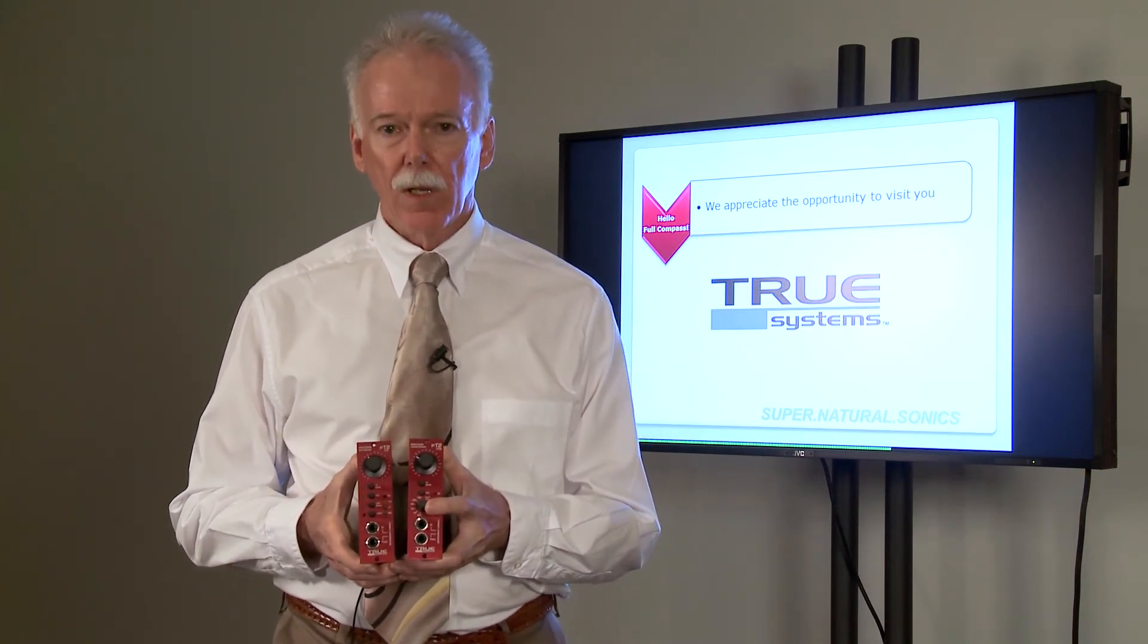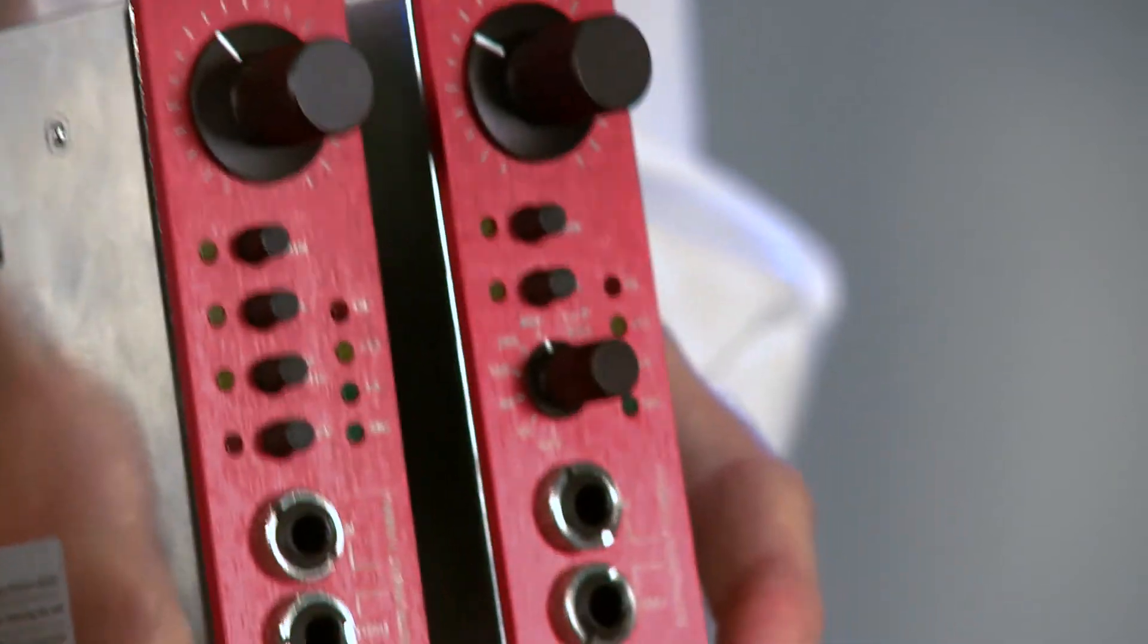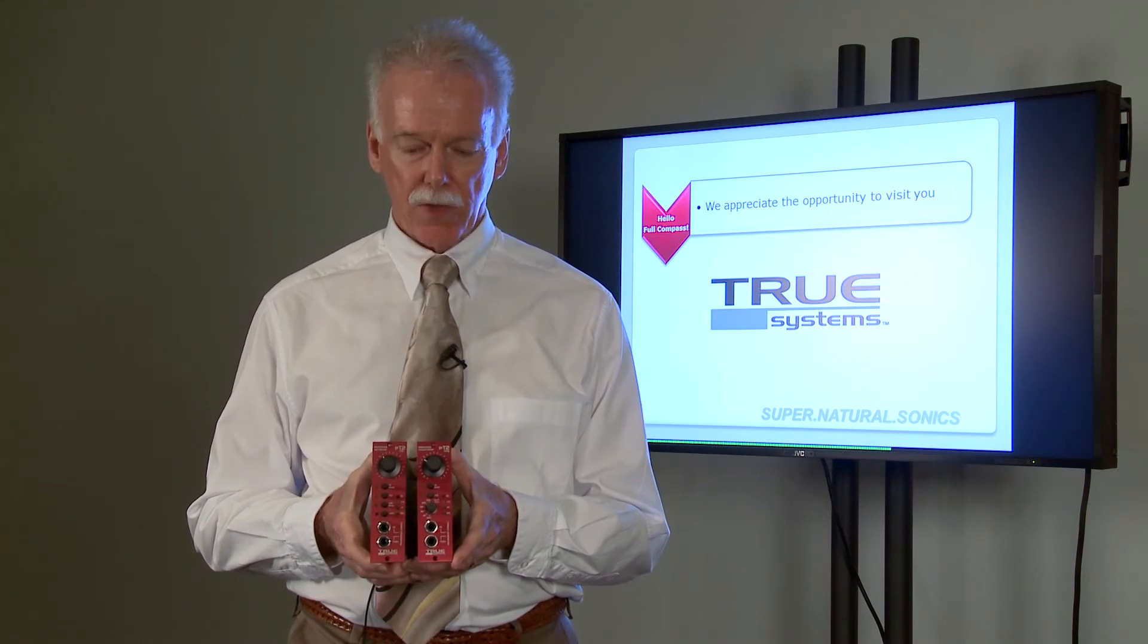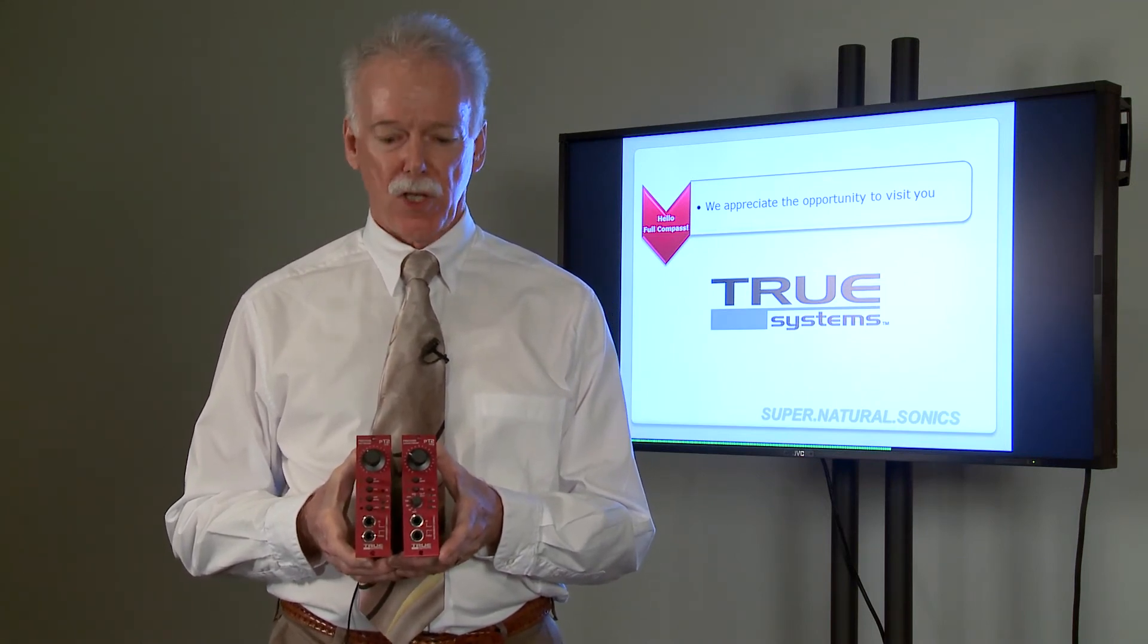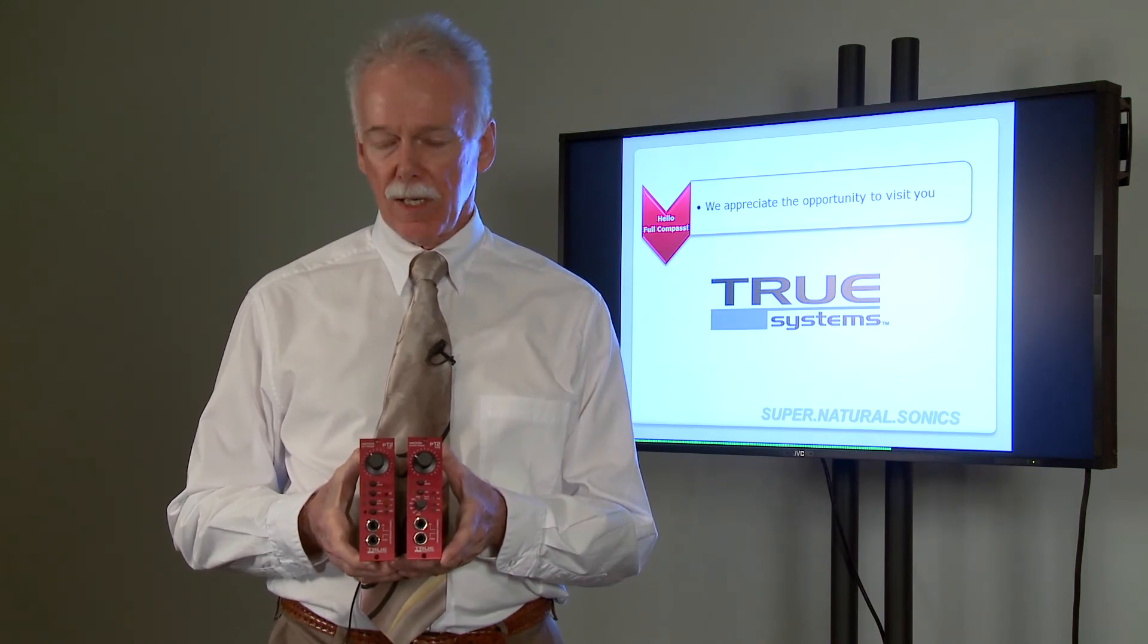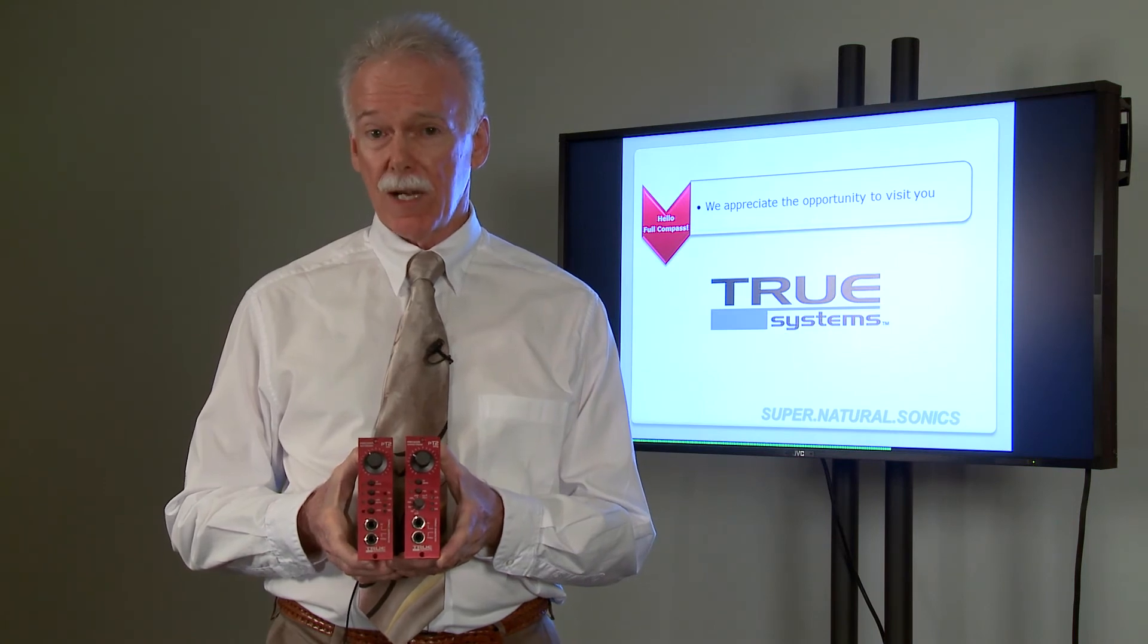And it also has this low-frequency adjust feature. Technically, it's a high-pass filter, but it's a much more musical design. It's 6 dB per octave, so you get a much more musical adjustment of the low end. And that helps with some proximity effect. It helps with smoothing out those bumps in the bass DI.